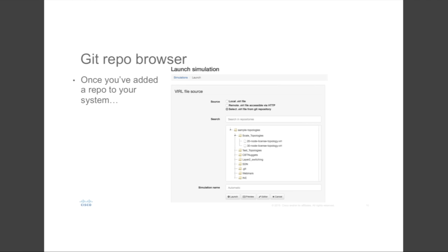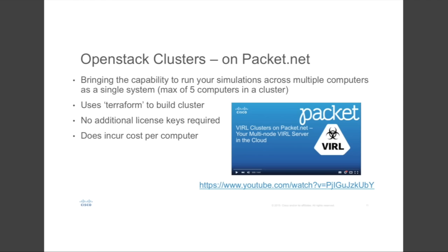A new function has been added to the simulation launch capability in UWM. When you select 'VIRL file from git repository,' there's now a browser so you can look through your environment, browse your directories, and pick the particular VIRL file you want, rather than having to enter anything by hand. Just browse, pick and choose, and launch.